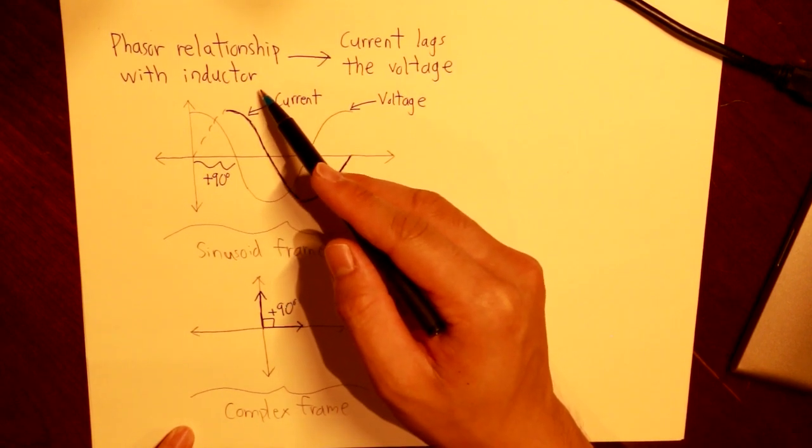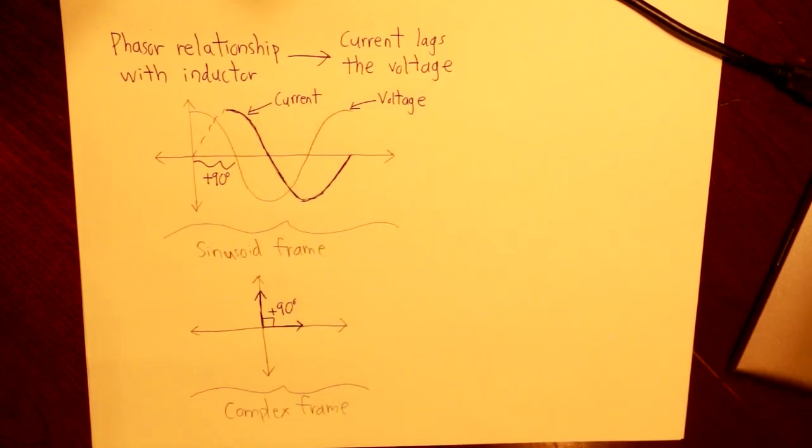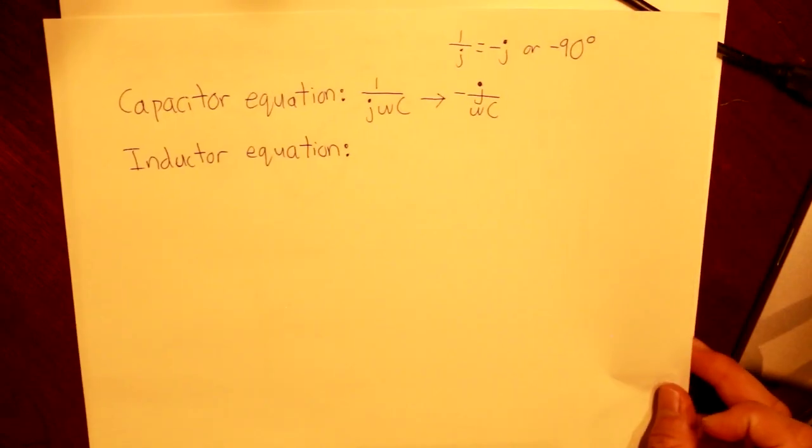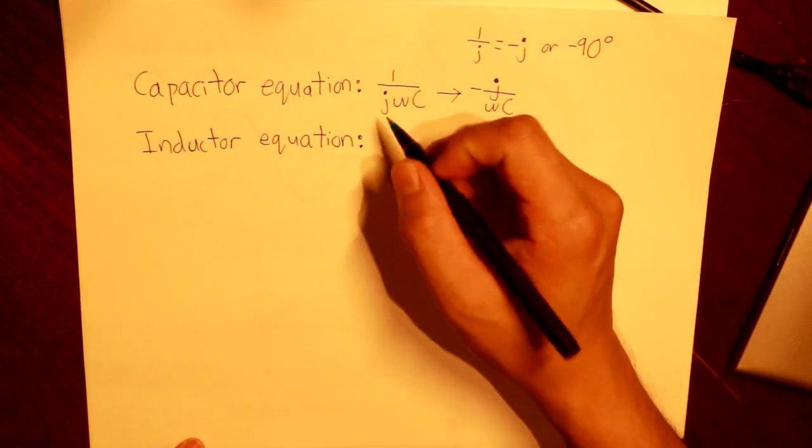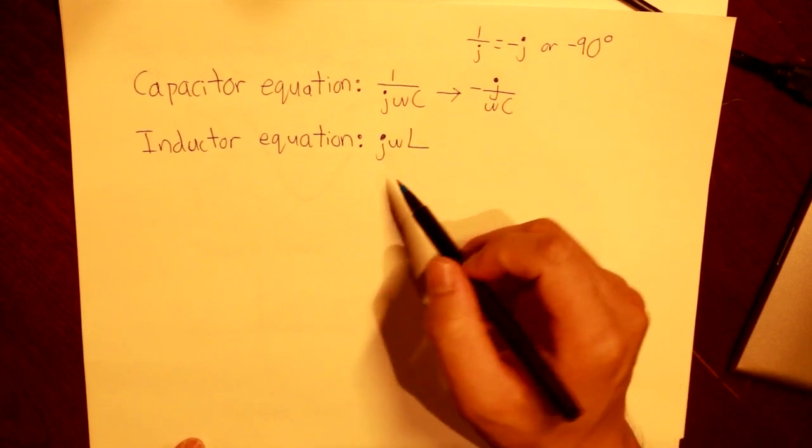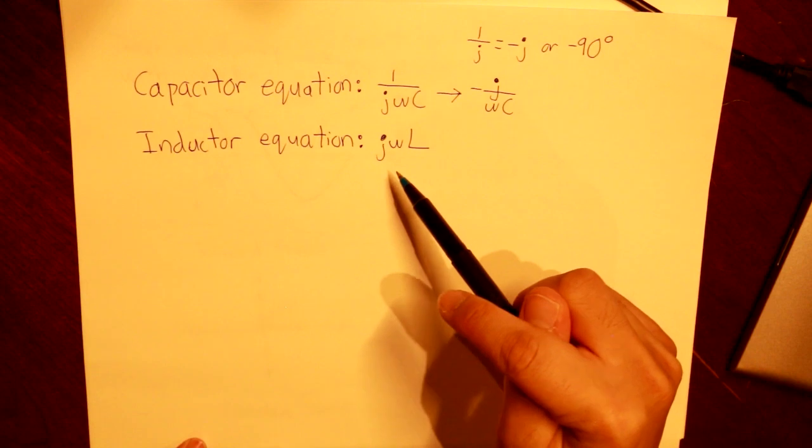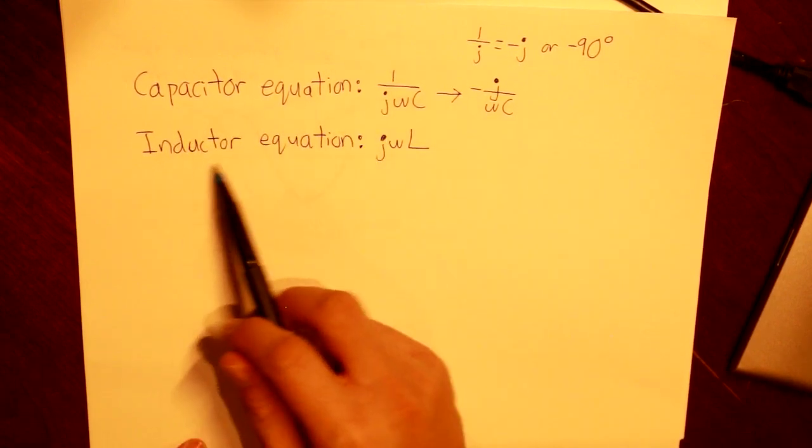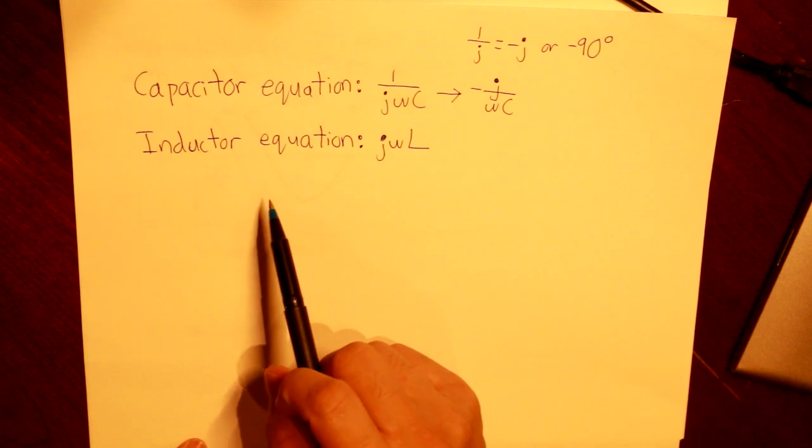Now how would we compute that into a numerical equation to calculate our circuit? So getting back onto this slide, our inductor equation will be JWL. And W, I forgot to mention, would be the angular frequency. So now that we've got our capacitor equation and our inductor equation, now we can move on back to our circuit element.